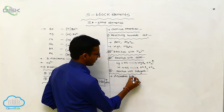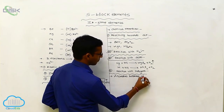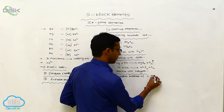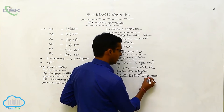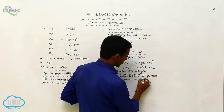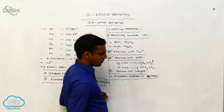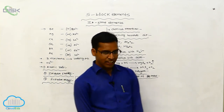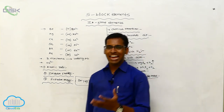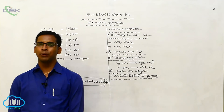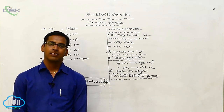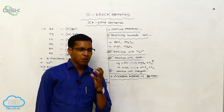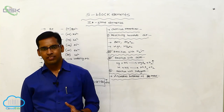Next is the anomalous behavior of beryllium metal within the secondary group elements. Beryllium shows anomalous character compared to the remaining metals because beryllium contains a small atomic size. That is the first characteristic of its anomalous behavior.